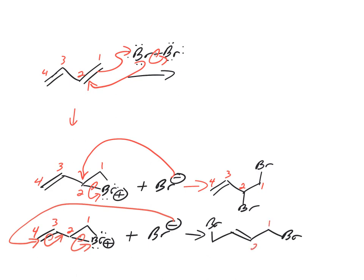So one, two, three, four. Now we've got a di-substituted alkene.